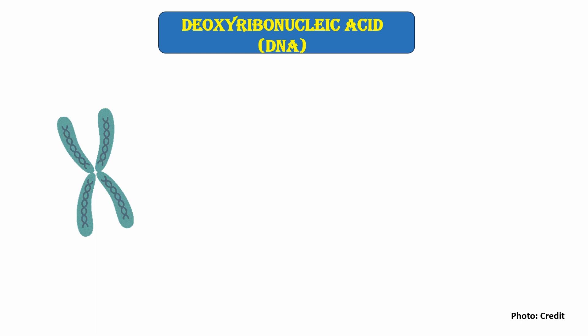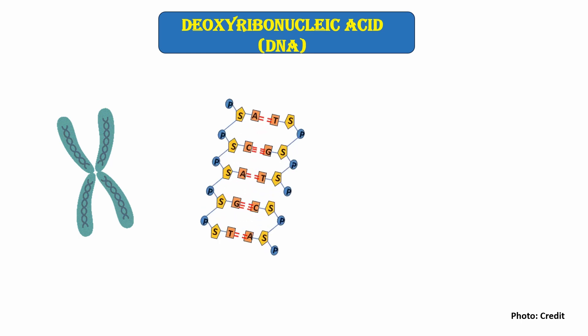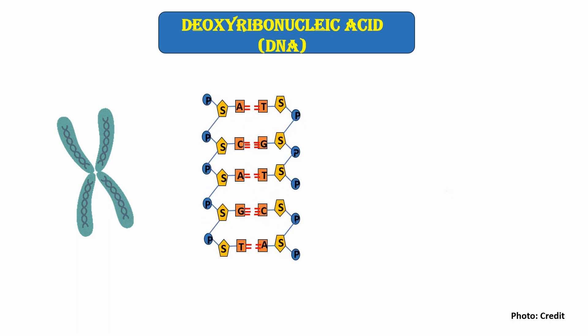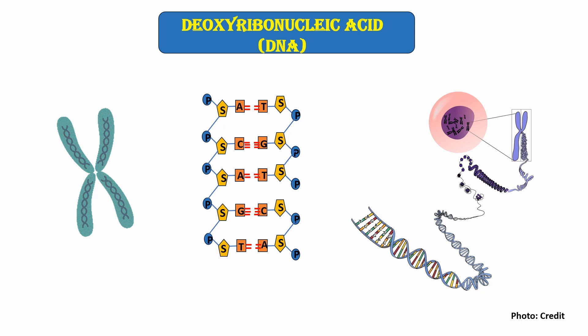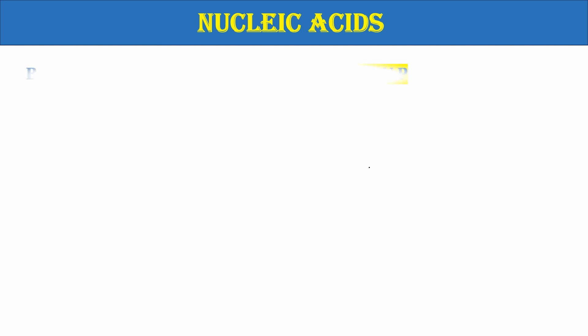Ribonucleic acid, biopolymer, DNA. There are 2 types of nucleic acid found in living organisms.